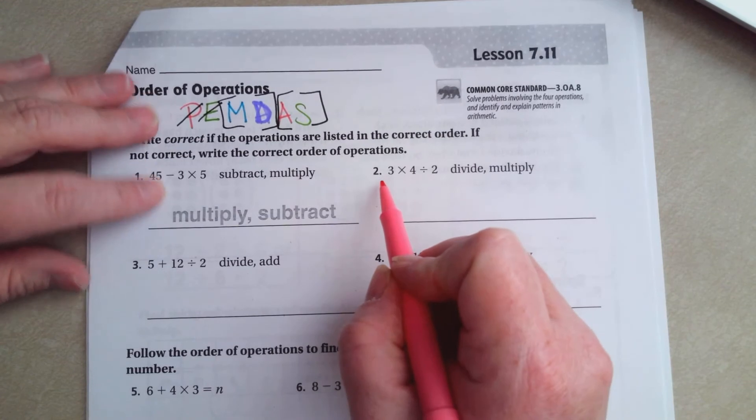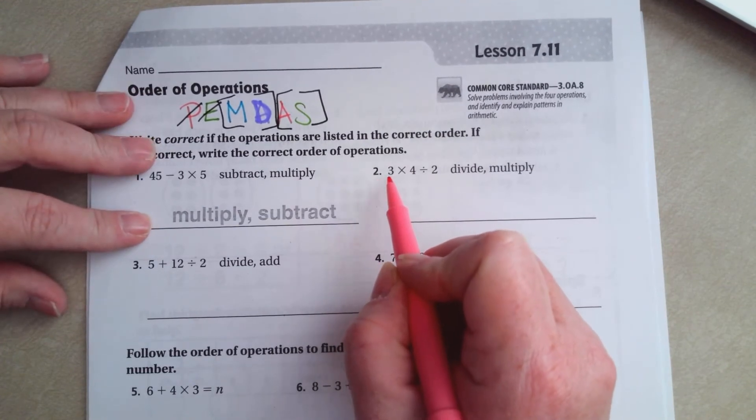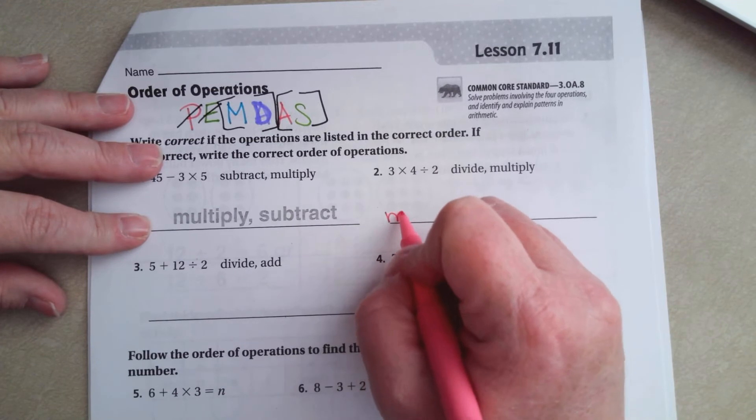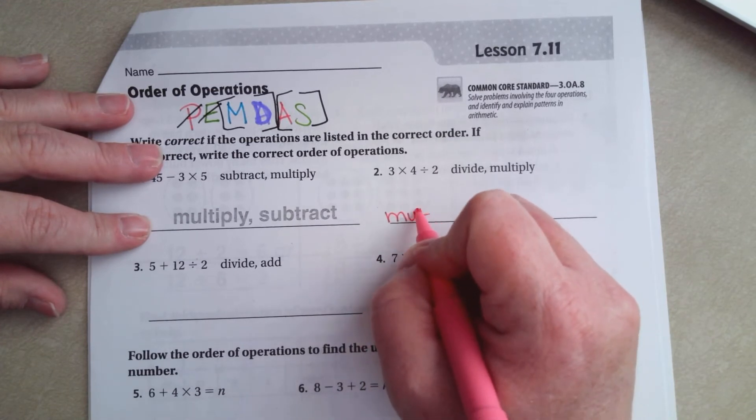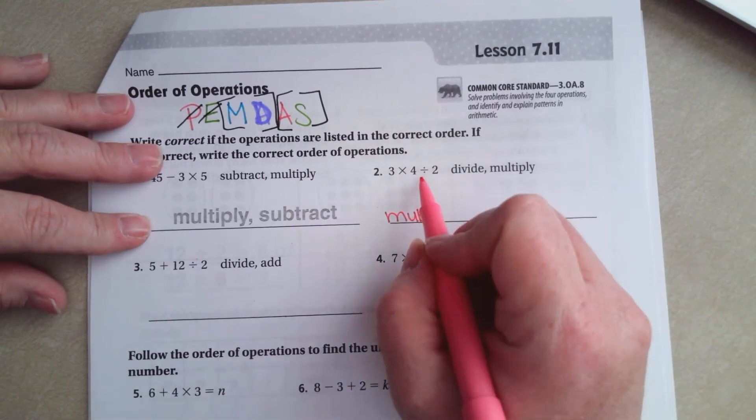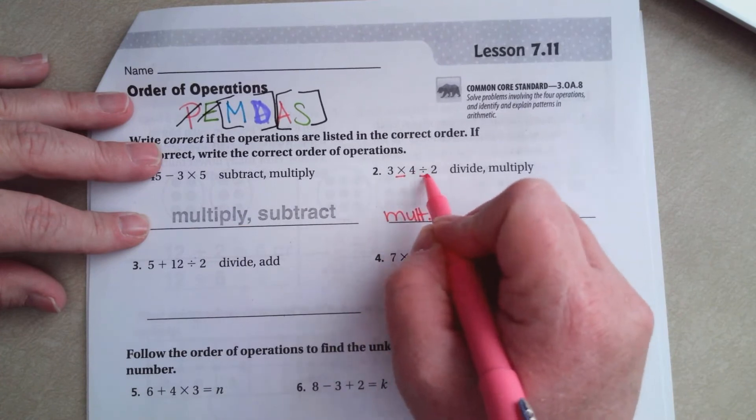So in this one when we come across first, the first thing that we come across is multiplication, so we would have to multiply first. Then we divide. Multiply then divide.